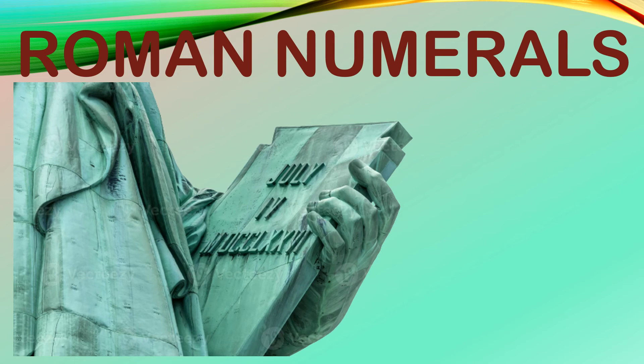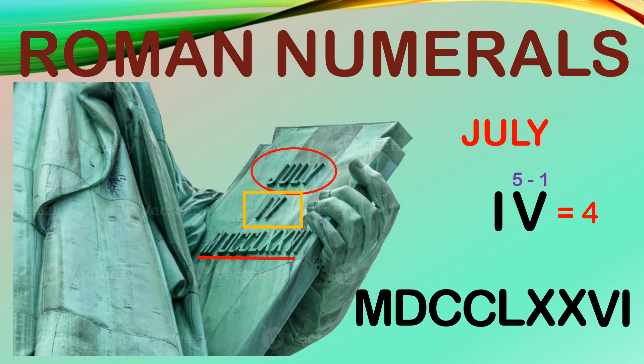Here is an image of the Lady Liberty holding a tablet. Help me figure out what is written on the tablet. This one says July, obviously. I, V is 5 minus 1, which is 4, and the multiple letters, M, D, C, C, L, X, X, V, I. M is for 1,000, D is 500, 100 for C, and we have two of them. L is 50 and two X's for 10 each. V is 5 and I is 1. So, all together, we have 1,776. So, apparently, this is a date that says July 4, 1776, which marks the Declaration of American Independence from Great Britain.